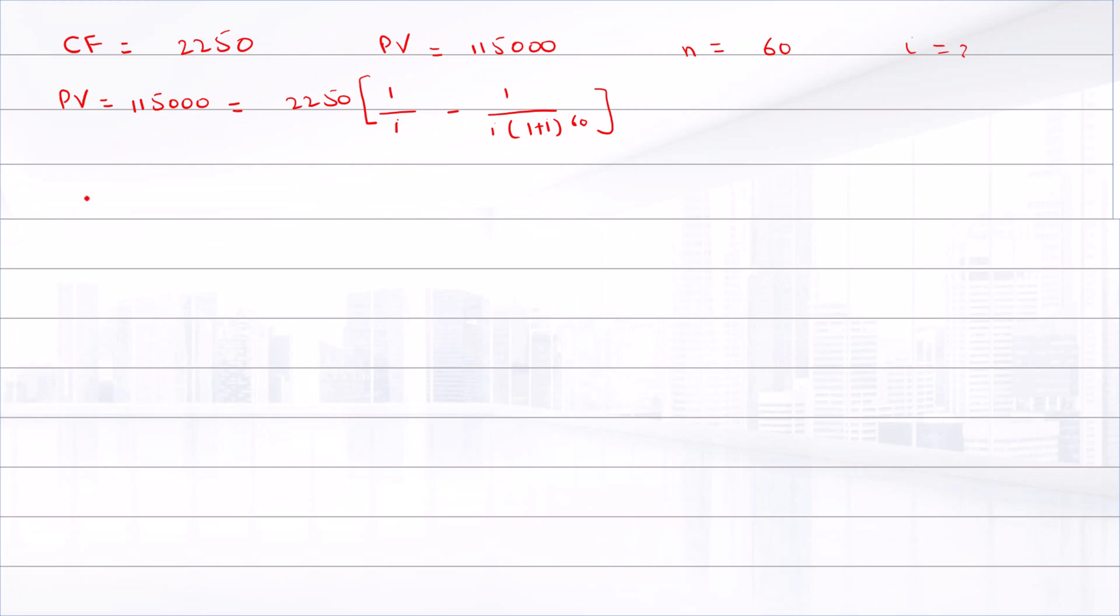So at 1%, present value is equal to 101,148.84, and at 0.4%, the present value is 119,809.95.